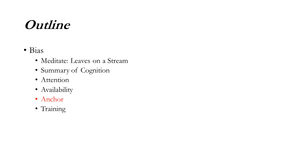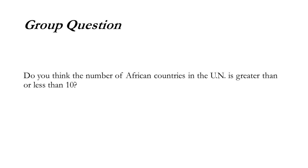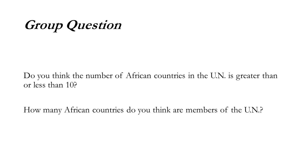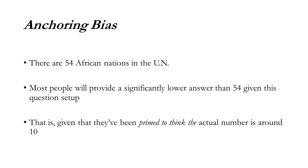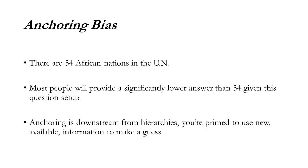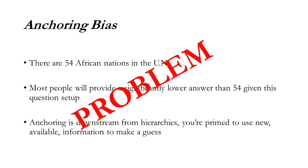Now let's think about anchoring. Do you think the number of African countries in the United Nations is greater than or less than 10? Pause if you don't mind. And now — how many African countries do you think are members of the UN? There are 54 African nations in the UN. Most people will provide a significantly lower answer than 54 given the way this question is set up, because they've been primed to think the actual number is around 10. Anchoring is sort of downstream from hierarchies — you're primed to use new, available information to make guesses. Again, System 1 — still a problem.